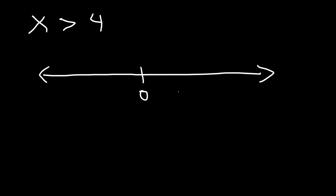So let's say this is 0, and 4 is somewhere to the right of 0. All the way to the right, if you keep going, is positive infinity. Negative infinity will always be to the left. Now, x is greater than 4, but not equal to 4. So it does not include 4 — we need to use an open circle, and because it's greater than 4, we need to shade to the right.